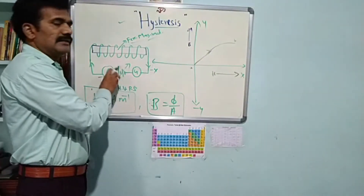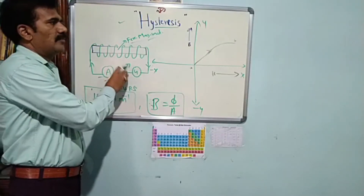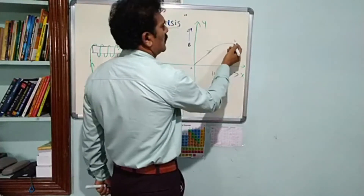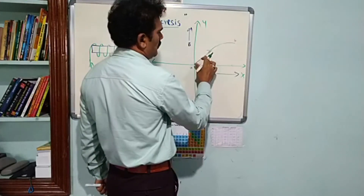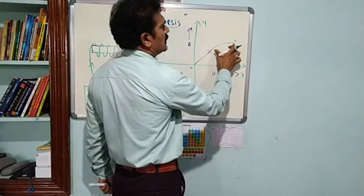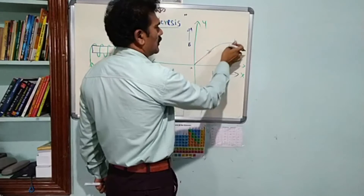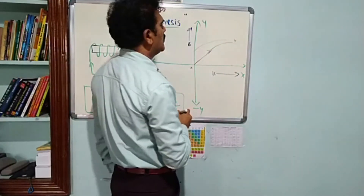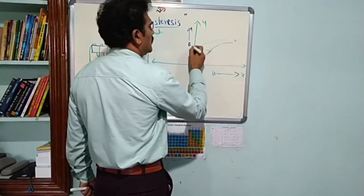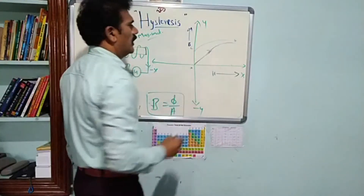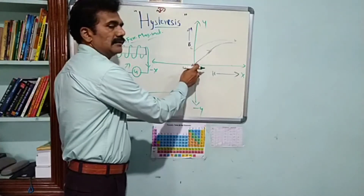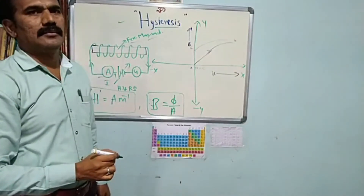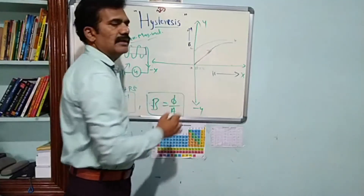After reaching saturation at point B, we decrease the applied magnetic field by decreasing the voltage and current. While decreasing, the material does not retrace the path from B back to A because retracing is only possible in the linear region. Instead, it follows a different path from B to C. At point C, the applied magnetic field intensity H is zero — coinciding with the origin on the H-axis.